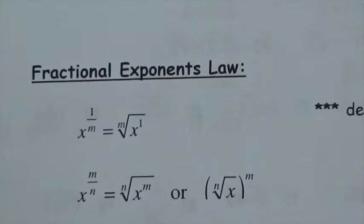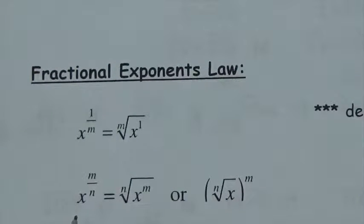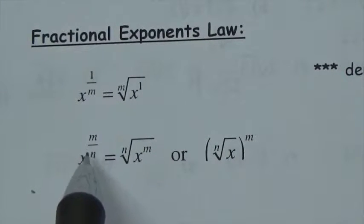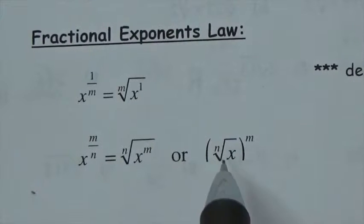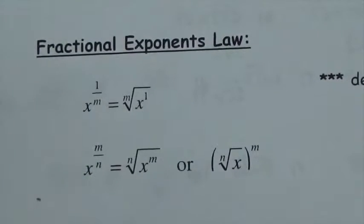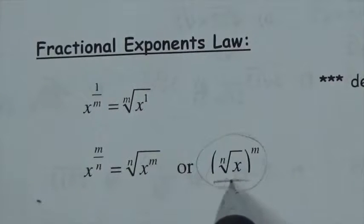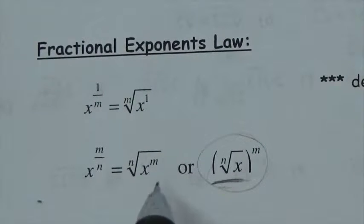Finally, fractional exponents: x to the one over m is the same as the mth root of x. If you've got x to the m over n, that's the nth root of x to the m. The exponent m can appear either inside the radical or outside — both are equivalent. You'll often find it easier to reduce the radical first and then apply the power rather than the other way around.